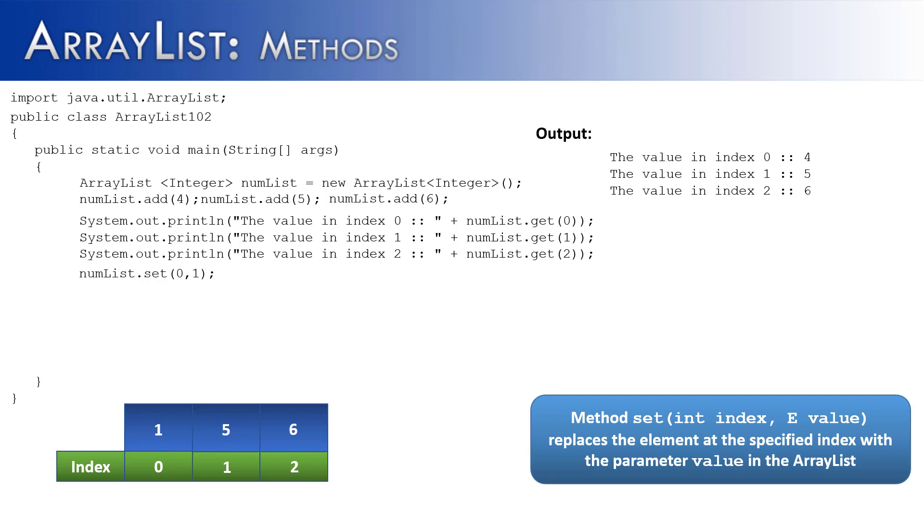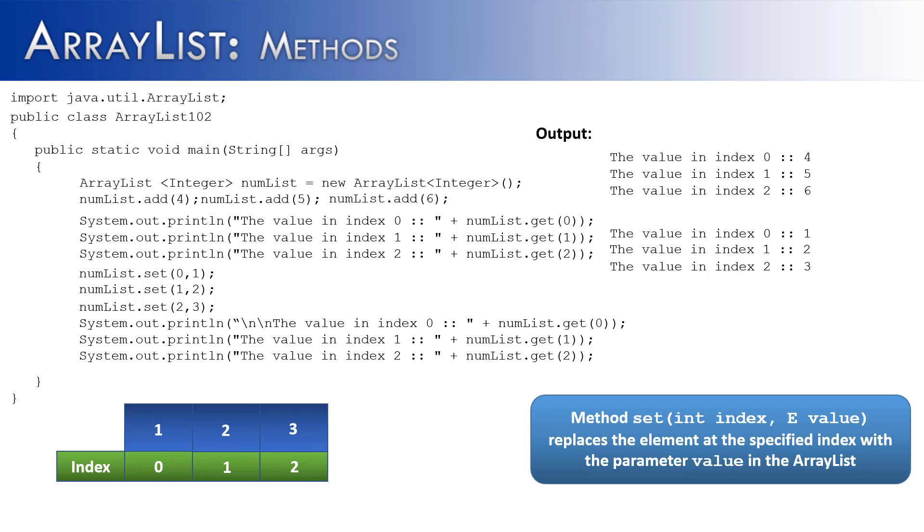Now if we wanted to change the other two values inside of the ArrayList, we can say set(1, 2). The first index becomes the element 2. And now to set the last value, we're going to change the 6 into a 3. So the set method is going to replace the values inside of the ArrayList. And then to show that they have been replaced, we can use the get method and show now the ArrayList has 1, 2, and 3 inside of it, instead of 4, 5, and 6.